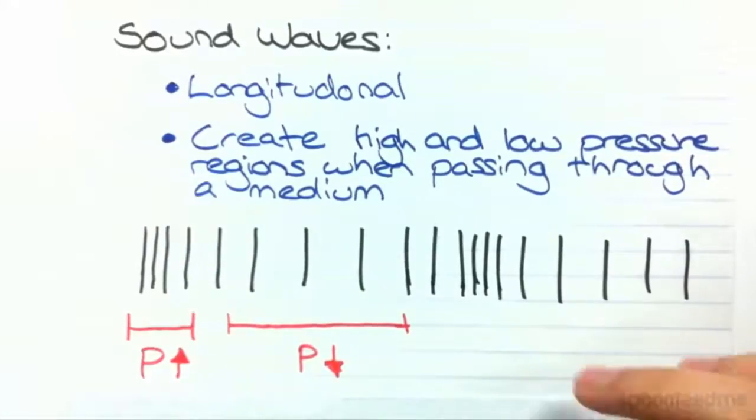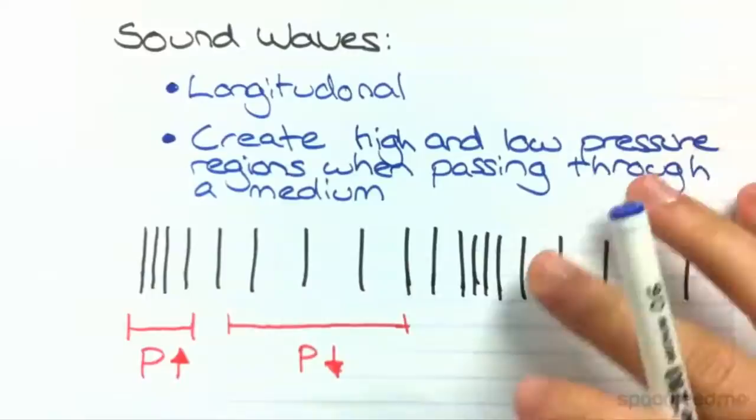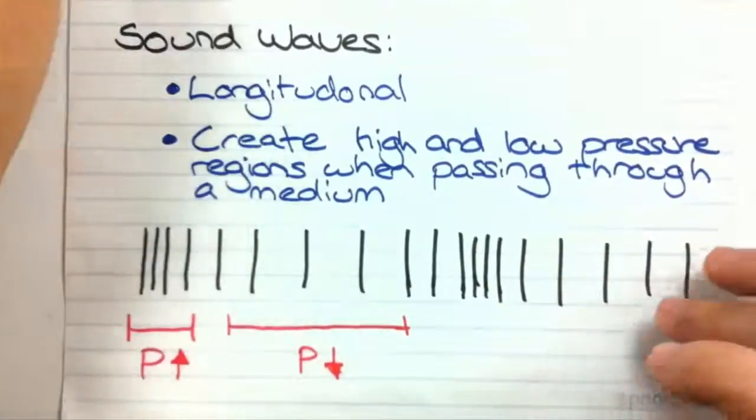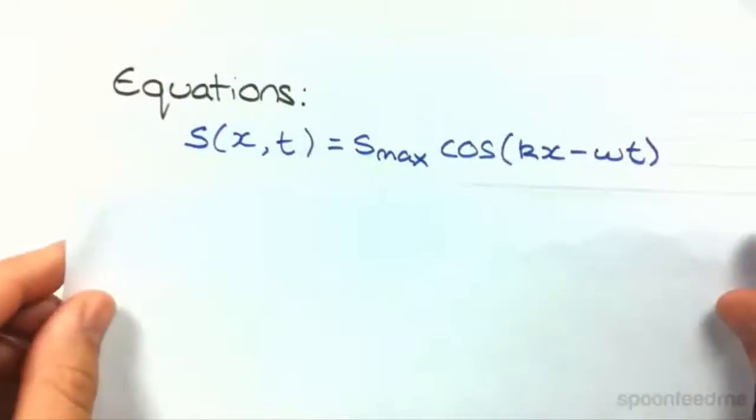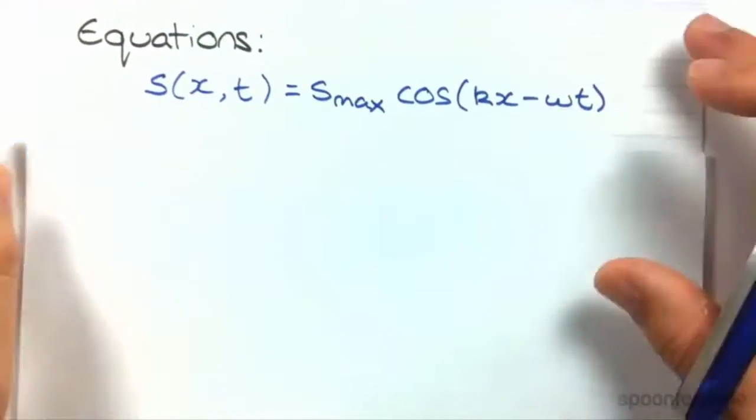So because of that, we have equations that relate to the displacement of these particles, as well as the pressure changes of these particles. And yeah, so that's what a sound wave essentially looks like as it's moving through a medium. And just note that it has to actually have a medium to propagate. You can't move through a vacuum, such as space. You can't hear anything.